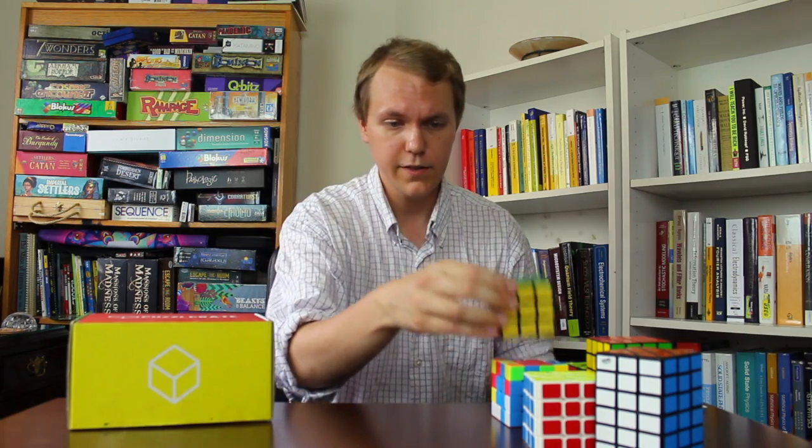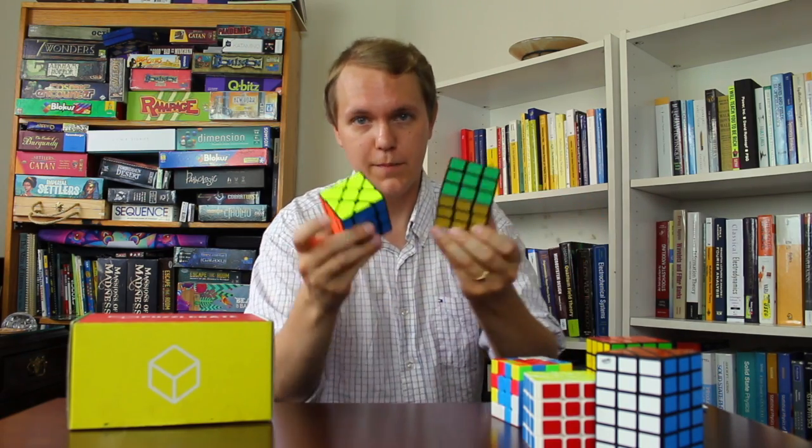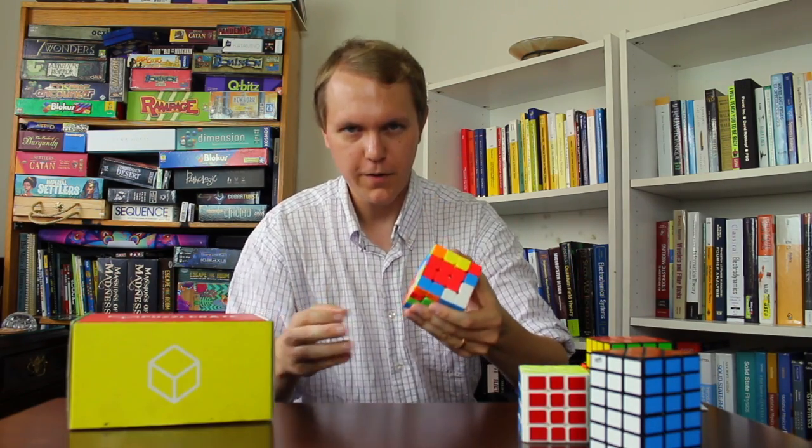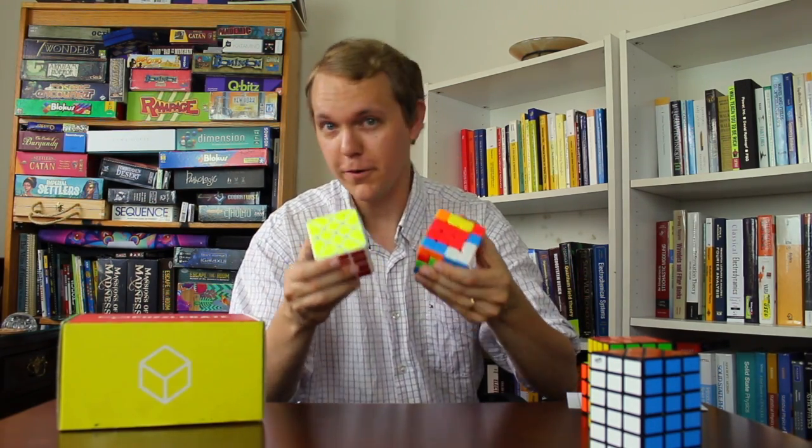You can also think about this puzzle as a natural extension of some of the other twisty puzzles that exist. For instance, a 3x3 cube becomes a 3x3 Fischer cube. Moving up to a bigger size, a 4x4x4 cube becomes a 4x4x4 Fischer cube.